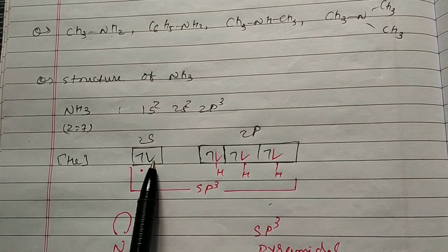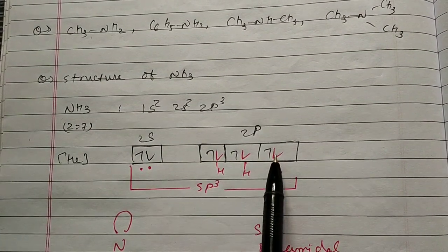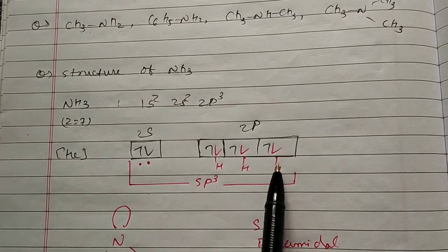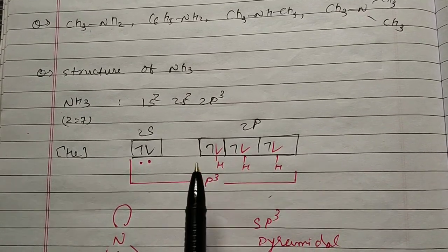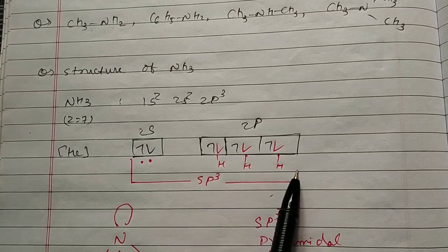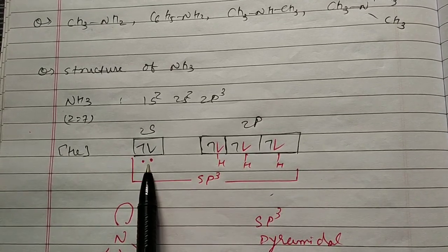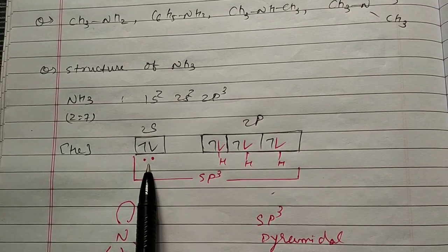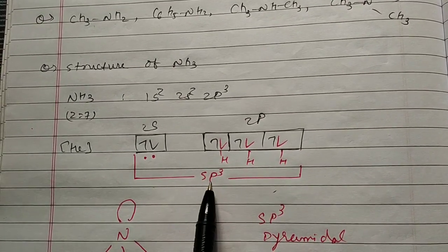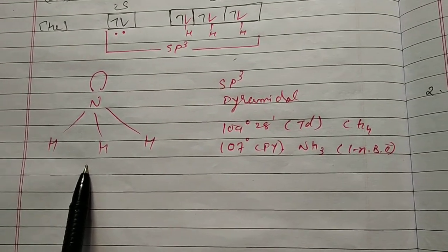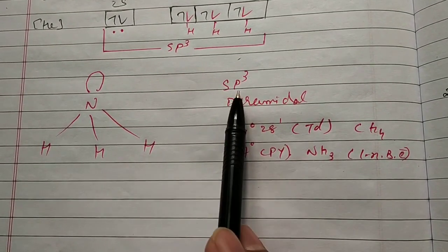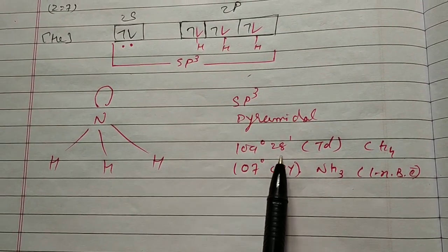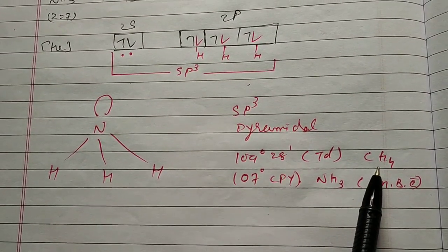So 2 electrons available in s and 1, 1, 1 electron available for p. Now, unpaired electrons, hydrogen is introduced to the system and converted into sp³ hybridization. S is not taking part in bond formation, so that's why that is non-bonding pair of electrons. sp³ hybridization, structure is NH3, pyramidal structure. Standard sp³ hybridization having tetrahedral geometry is 109°28', CH4 is the answer.